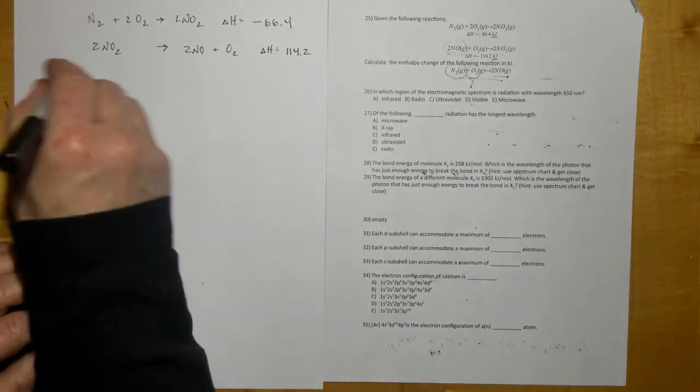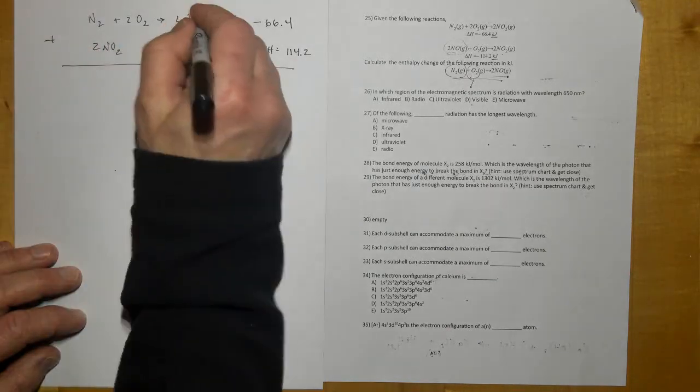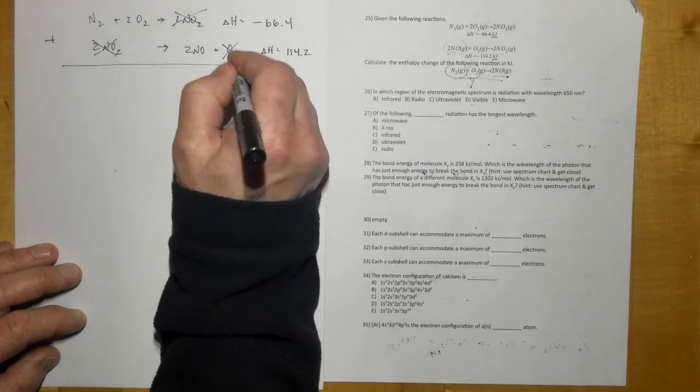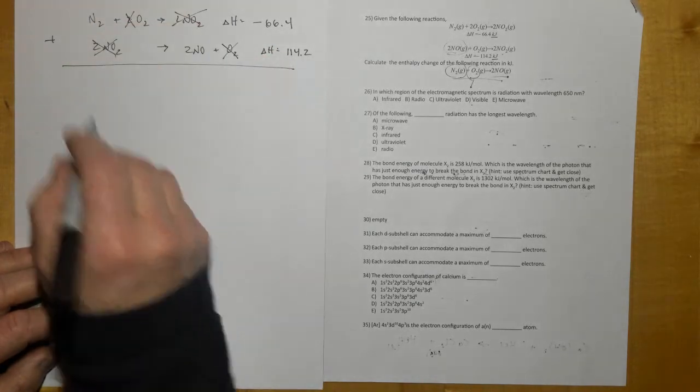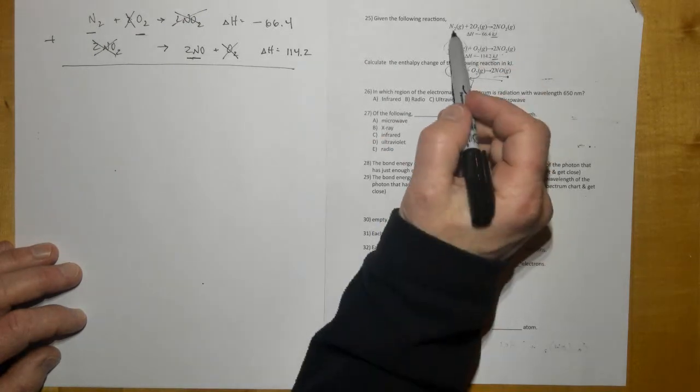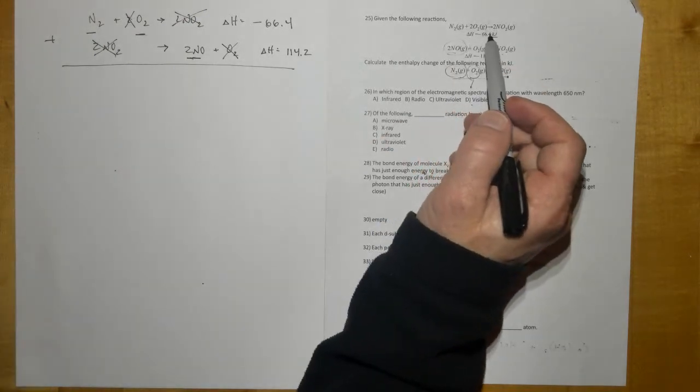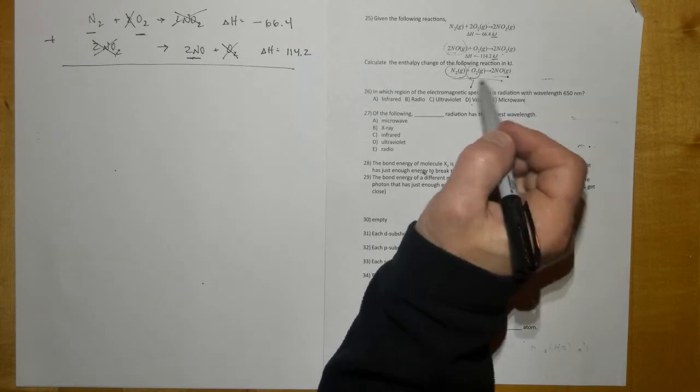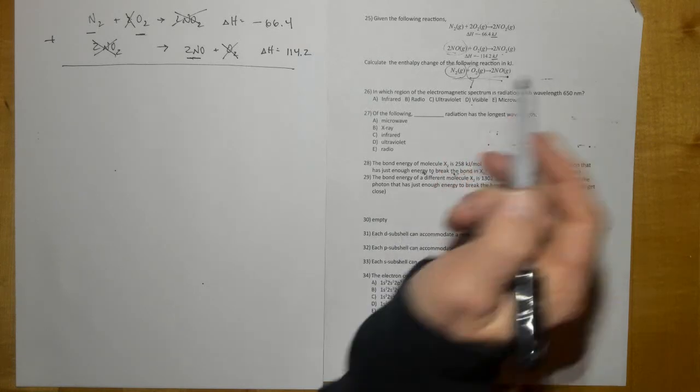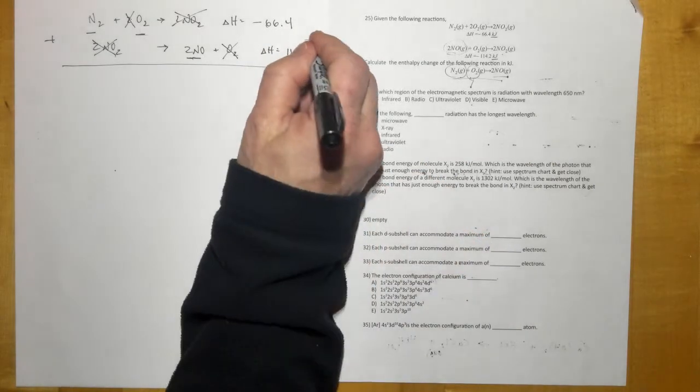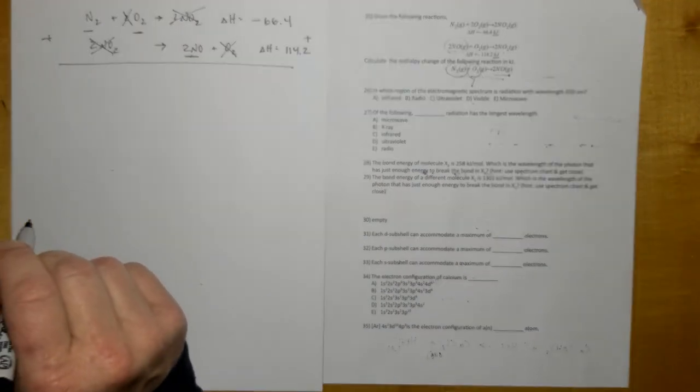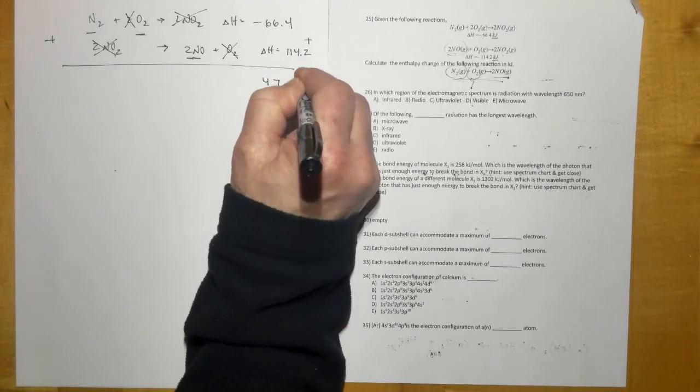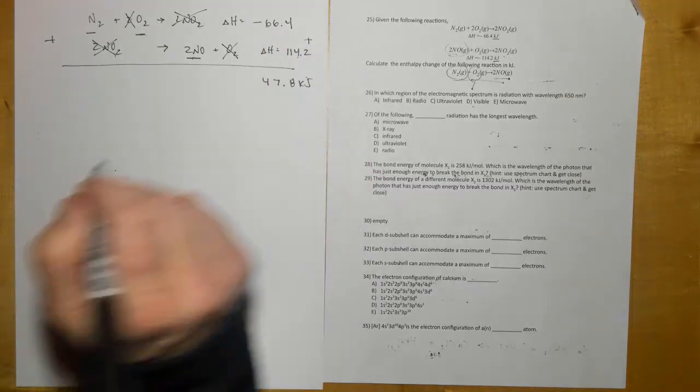Now when we add the two reactions together, you can notice that the two NO₂s go away, the O₂, one of them goes away here, one of them goes away right here, and we're left with our goal reaction, the one that we want to know right here. So to make that happen then we have to add the two enthalpies together. And if we add those two together we end up with 47.8 kilojoules, positive value because this is positive, this is negative.